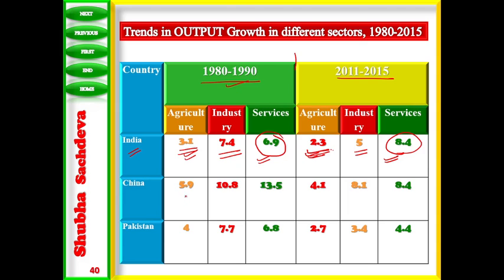In comparison, China's agriculture output growth rate was 5.9 percent in 1980-1990 and reduced to 4.1 percent in 2011-15. Pakistan's agriculture output growth rate was 4.7 percent. In industry, China had a very good output growth rate of 10.8 percent, but it reduced to 8.1 percent. Pakistan reduced from 7.7 percent to 3.4 percent. In the services sector, China's output growth rate was 13.5 percent but reduced to 8.4 percent, and Pakistan also reduced to 4.4 percent. So China and Pakistan's output growth in all three sectors has decreased, but India is unique in that its services sector output growth rate increased from 6.9 to 8.4 percent.